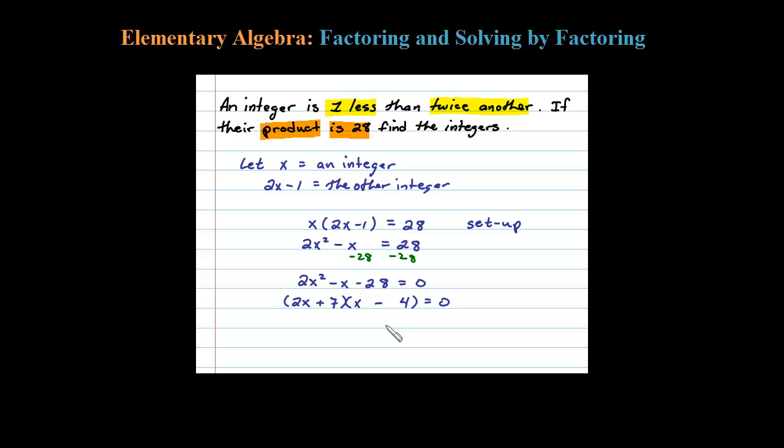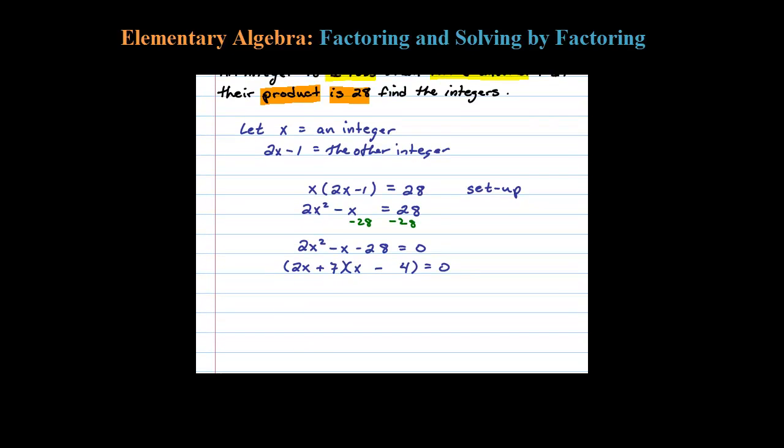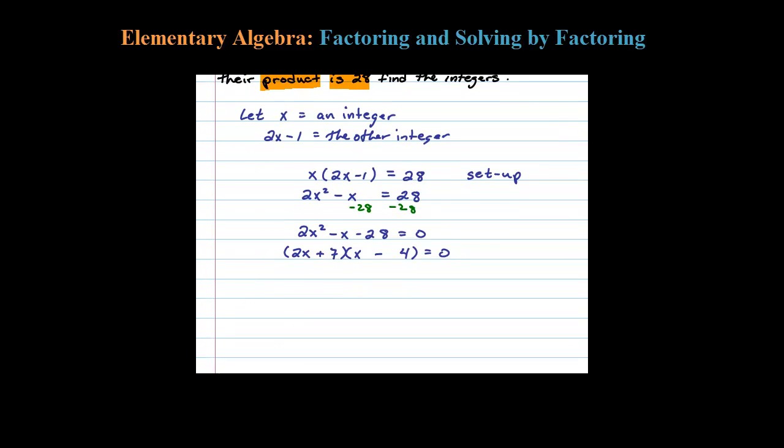Once you have it factored correctly, then set each factor equal to 0. So 2x plus 7 equals 0 using the zero property, or x minus 4 equals 0. All right, so this here tells me x equals 4, and the second solution here, 2x equals negative 7, or x equals negative 7 halves.